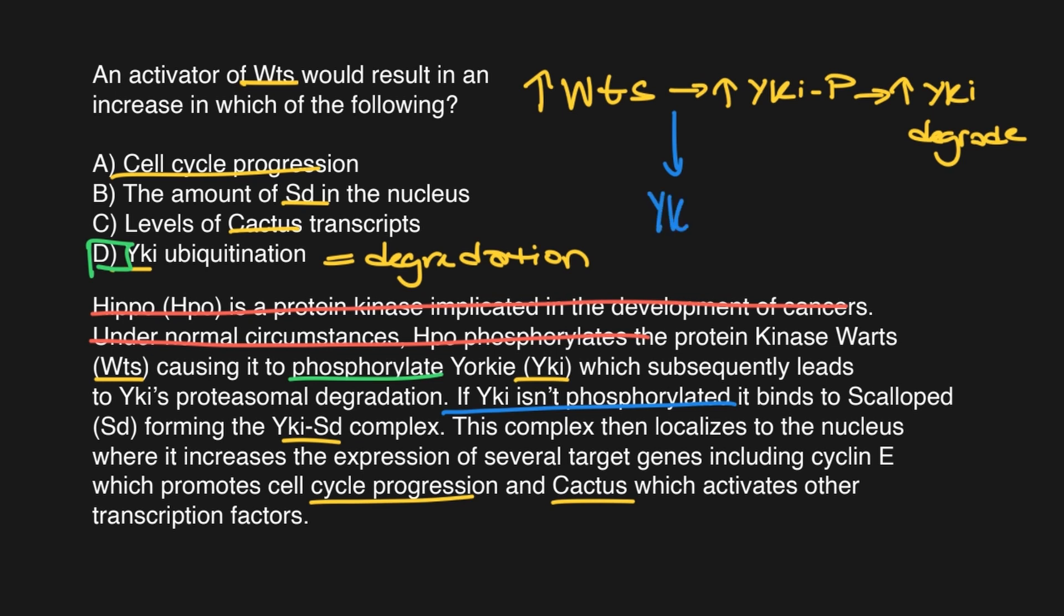So what does it say? It says if YKI isn't phosphorylated, it binds to scallop forming the YK-SD complex. So then I would just draw an arrow that says YKI and I'll say without P for without phosphorylation. And this is going to lead to an increase in the SD-YKI complex. What happens next? It says this complex localizes to the nucleus where it increases. I'm going to stop there. I'm stopping here because it all of a sudden tells me about the nucleus and that's my answer choices. Rather than writing another arrow that then says goes to the nucleus, I'm just going to go ahead and put a nucleus underneath the YKI-SD complex so that way I know that those two ideas are ultimately attached to one another.